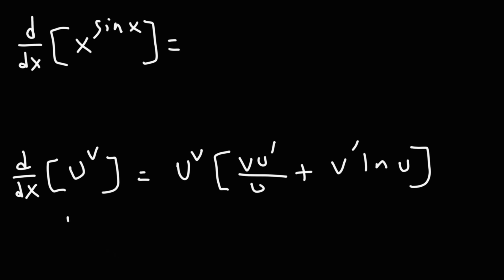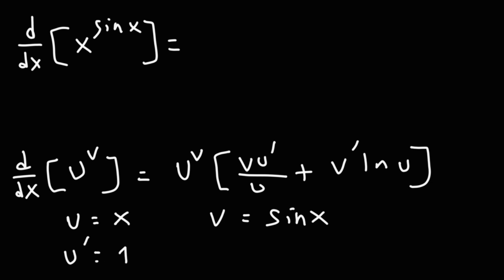So first we need to determine u and v. u is x, v is sine x. u prime — the derivative of x — is 1. v prime — the derivative of sine x — is cosine x.